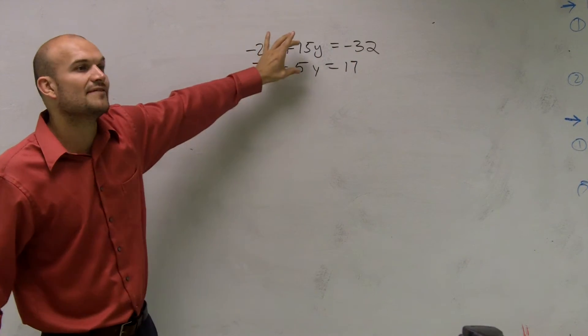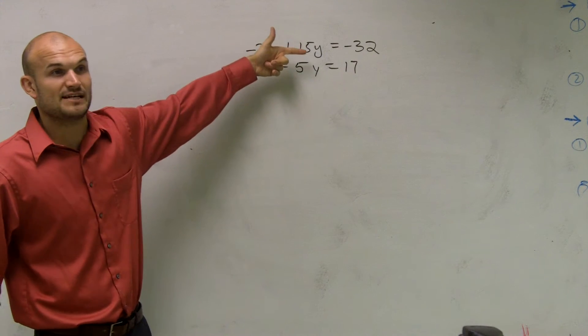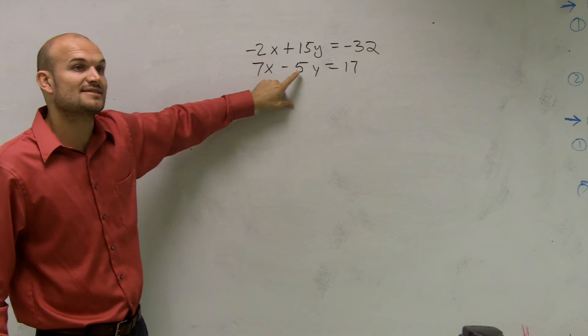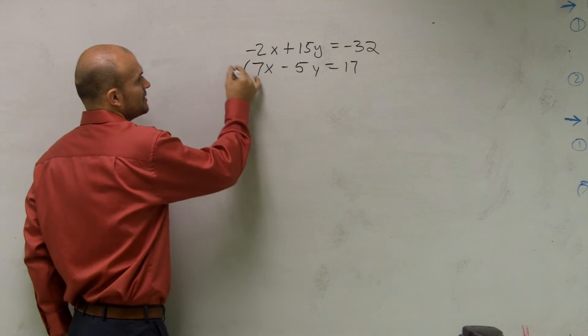And I look at 15 and 5, the lowest common multiple between 15 and 5 is 15. I don't need to do anything to get 15 to be 15. All I need to do to get this negative 5 to 15 is to multiply by 3. So that's exactly what I'm going to do.